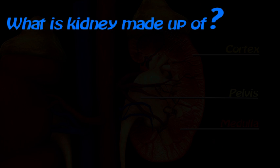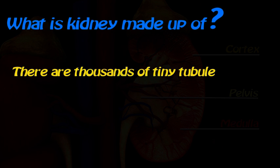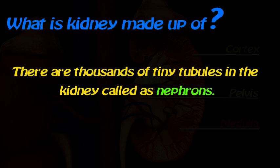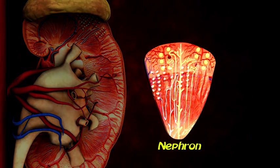What is the kidney made up of? There are thousands of tiny tubules in the kidney called nephrons. The basic functional unit of the kidney is a nephron.